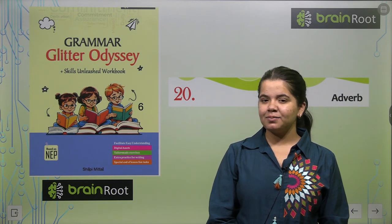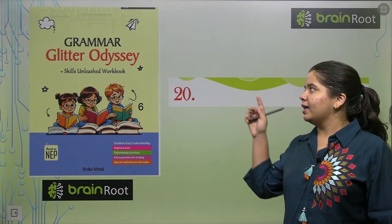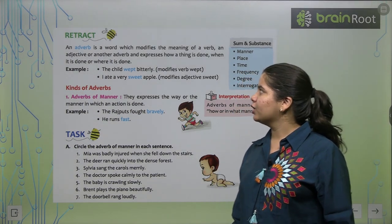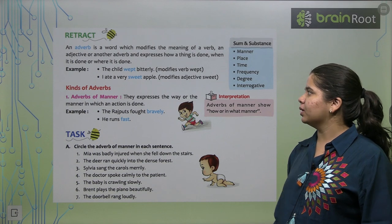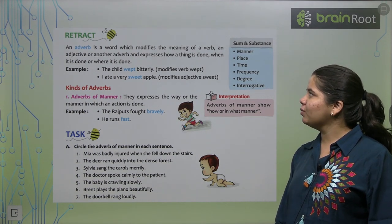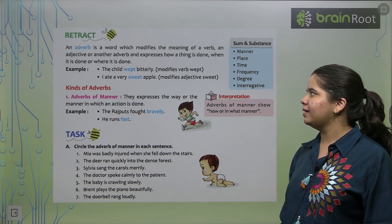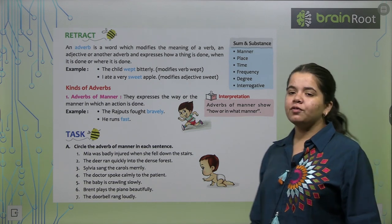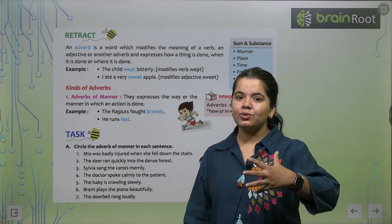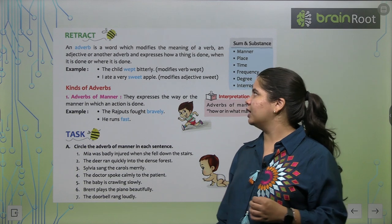So today our chapter name is Adverb. Let's see what we have in Adverb. An adverb is a word which modifies the meaning of the verb, an adjective or another adverb and expresses how a thing is done, when it is done or where it is done. So what word which tells us that one particular thing is done, we call Adverb.